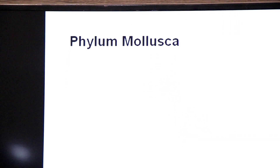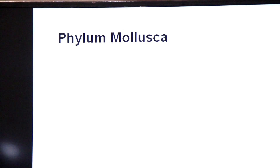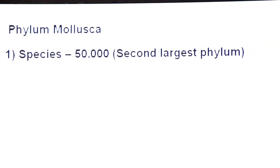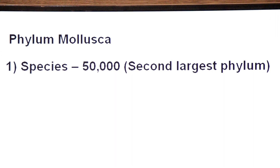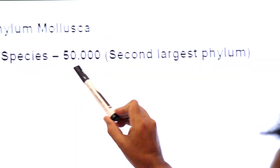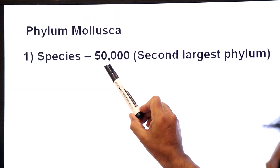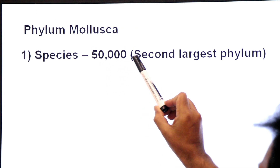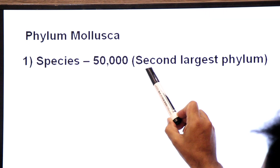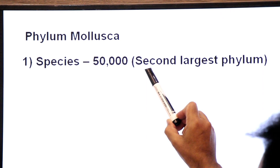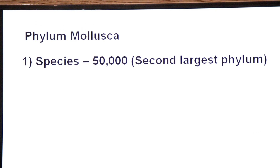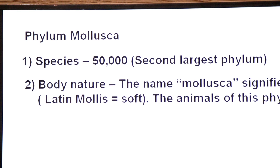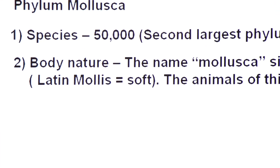Let's first see how many species are included in phylum Mollusca. According to our textbook of biology, phylum Mollusca includes 50,000 species and it is the second largest phylum after Arthropoda. Arthropoda is the largest phylum and second largest is phylum Mollusca.